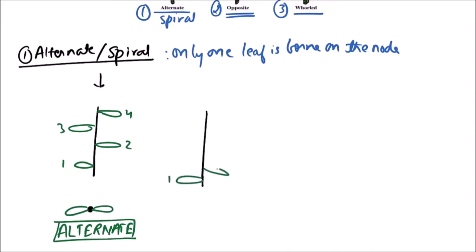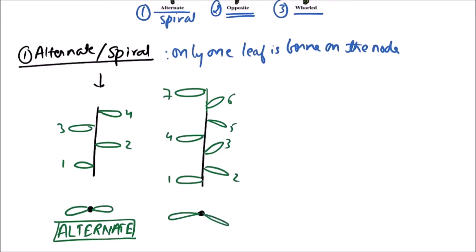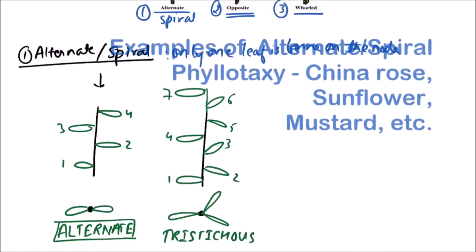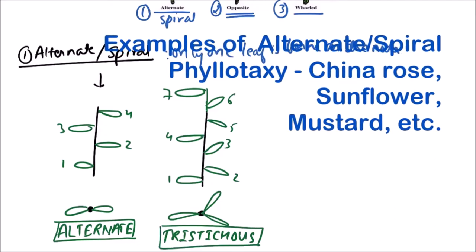In another example, we have the first leaf, second leaf, third leaf, fourth leaf, fifth leaf, sixth leaf, and seventh leaf. If we observe it from above, the first will be overlapped by the fourth and seventh, the second will be overlapped by the fifth and eighth, and the third will be overlapped by the sixth and ninth. This type of arrangement is known as tristichous phyllotaxy — three vertical rows are observed.